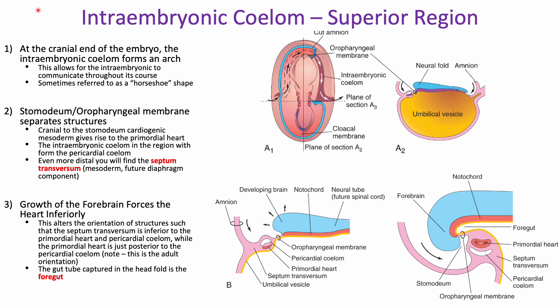In a coronal view, the intraembryonic coelom forms a horseshoe-shaped structure that goes up over the top of the future oral cavity of the developing embryo. The intraembryonic coelom is located a little bit further distally than the oropharyngeal membrane, which is the future development of the mouth and oral cavity. Just underneath the intraembryonic coelom we see a red-pink structure — that's actually going to be the primordial heart, the region of mesoderm that will derive the heart tissue.